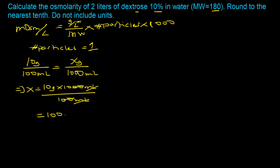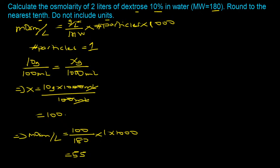Putting this back into the equation: milliosmoles per liter equals 100 divided by 180, times 1, times 1,000. Rounding to the nearest tenth and not including units, the answer is 555.6. The key takeaways are how to handle a non-electrolyte like dextrose, and how to use percentage concentration to determine the weight of substance in grams per liter.